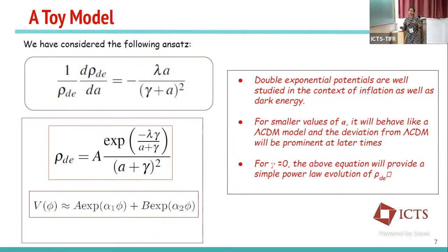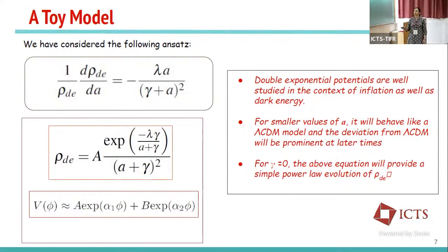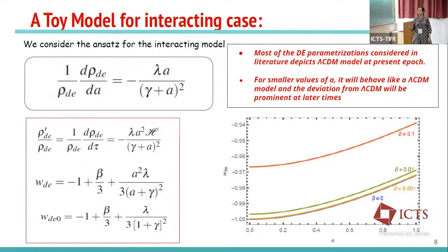For this, we have made a particular ansatz, choosing the energy density for dark energy in a specific form. If we frame dark energy in terms of a scalar field along with its potential, the corresponding potential turns out to be a double exponential potential. Such double exponential potentials are very well studied in the context of inflation as well as late-time dark energy models, and in certain limits they reduce to a power-law function.